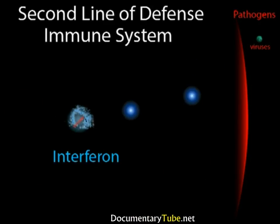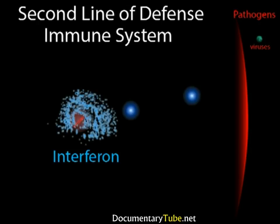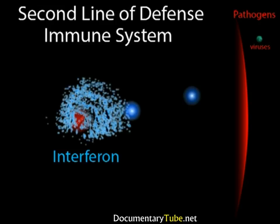Interferon is a protein produced by a cell infected by a virus. There is really no hope for a cell once the virus enters the lytic pathway. However, as it is being attacked by the virus, the cell will produce interferon. The interferon won't save that cell, but it will signal neighboring cells to strengthen themselves against viral attack.